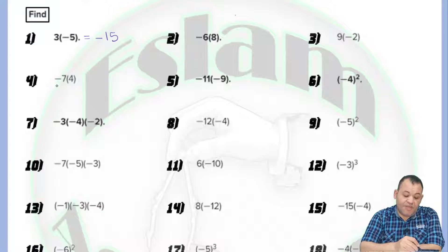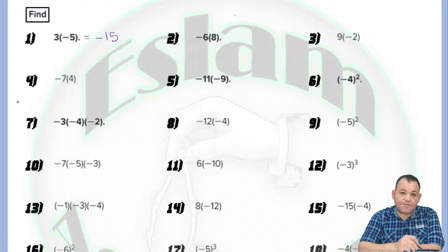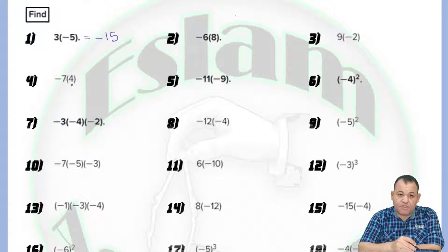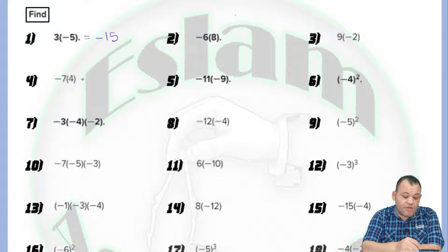Again, we have negative 7 times 4. A number beside a bracket with no sign between them means multiplication. The first number is negative and the second is positive. Since the two numbers have different signs, the answer will be negative. Then multiply 7 times 4 equals 28.